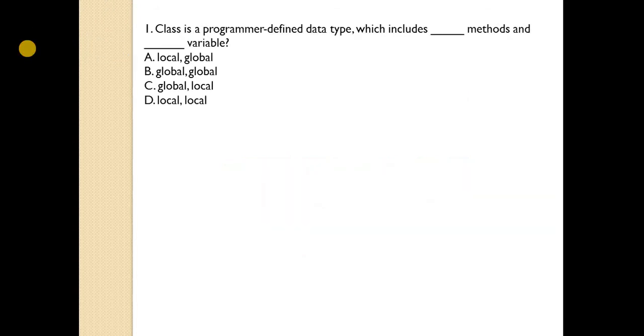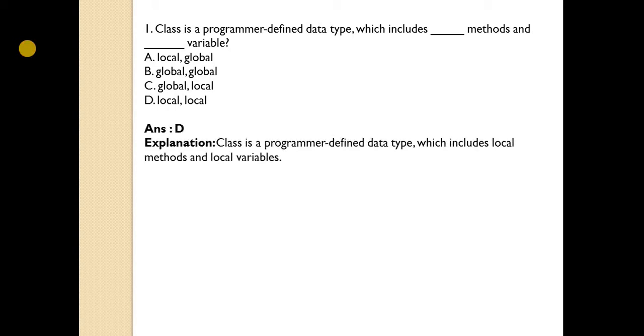Class is a programmer-defined data type which includes dash methods and variable. Answer is D. Class is a user-defined data type which includes local methods and local variables.